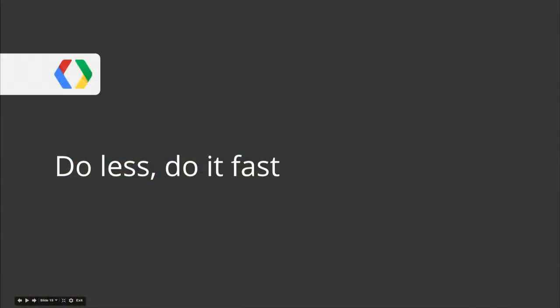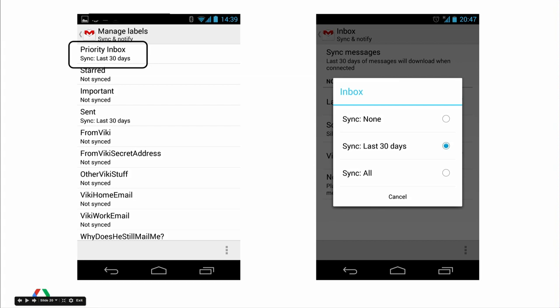Mobile networks are slow and expensive. Not everyone has unlimited high-speed data, so it helps to keep your network usage in check. In addition to turning on the network less frequently, you need to do less with it once the connection is established. Gmail tries to limit total data usage — we let users configure what gets synced and how much mail we sync. By default, users only get 30 days of mail from their inbox.